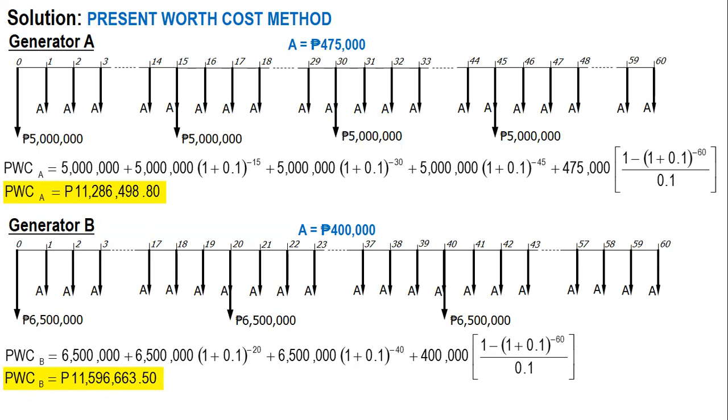And since we are considering cost, it means you have to choose the smaller cost, the smaller value. And since the smaller one is for generator A, which is 11,286,000, while for B it's 11,596,000, therefore we have to choose Generator A. So the conclusion is: since the present worth cost of A is less than the present worth cost of B, we choose Generator A. So in comparing alternatives it is important to use equal study periods, like in this case 60.